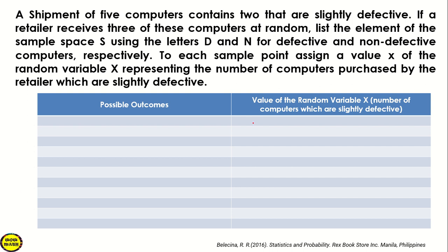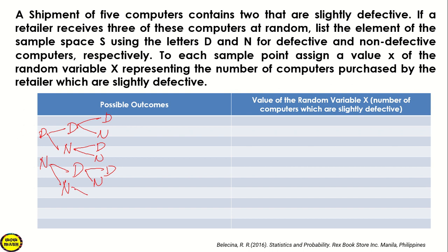What we are going to do is identify the possible outcomes. Since tatlo yan (there are three), we use D for defective and N for non-defective. Since 3 computers yun, we can make a tree diagram with 3 levels — defective and non-defective for each computer.